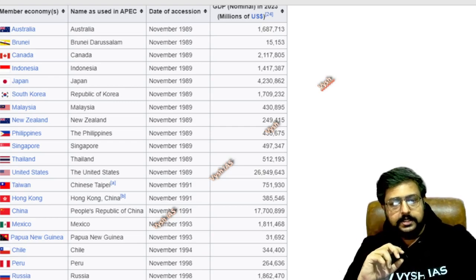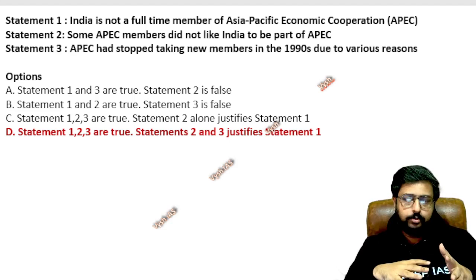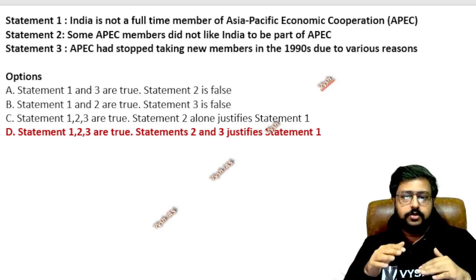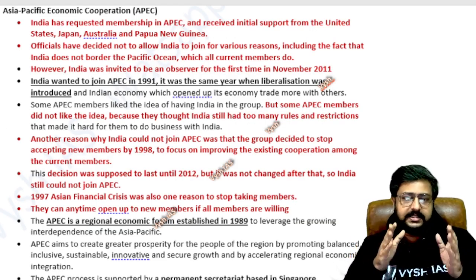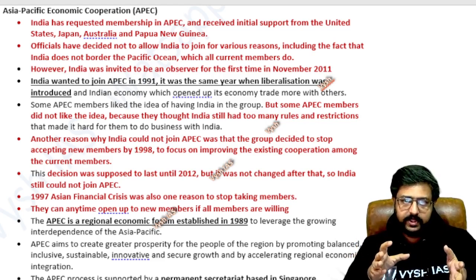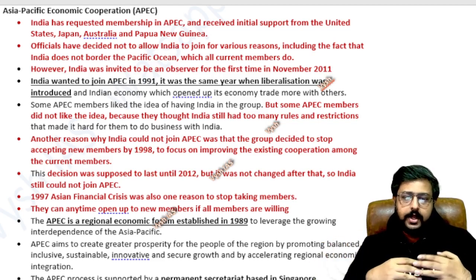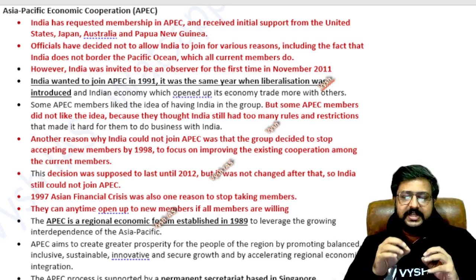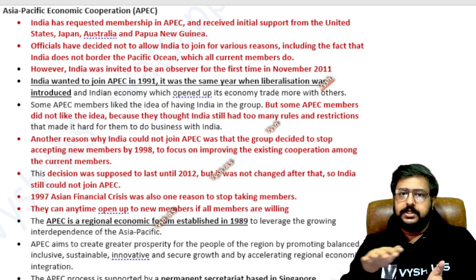The answer is the last option: statements 1, 2, and 3 are all true, and both 2 and 3 justify statement 1 — some APEC members did not like India to be part of it, and APEC had stopped taking new members in the 90s. So all three are true and two and three justify statement 1. This is the level of question and thinking you have to do in the exam hall. My students already have the PDFs. Very serious aspirants only should enroll — you should be fully believing in this model and ready to study it in the next three months.